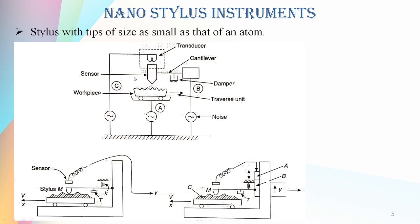Conventional stylus methods involving contact with the surface under investigation may use a sharp diamond stylus, but these are seen to result in slight surface damage. However, it has become possible to produce a stylus with tips as small as that of an atom — in the 10 to the minus 9 nano range — for use in nano stylus instruments. Techniques such as ion beam milling have enabled such tip production with better protection.